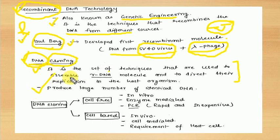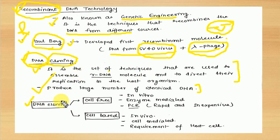It produces a large number of identical DNA copies. Cloning means multiple copies of a single DNA. DNA cloning can be of two types: cell-free cloning and cell-based cloning.